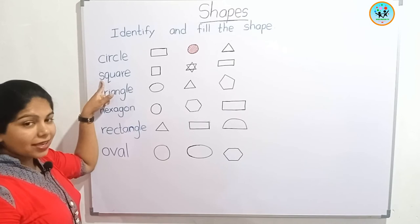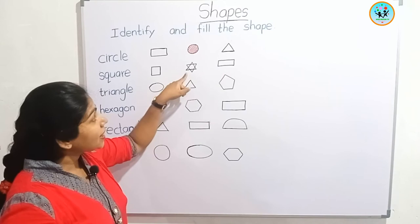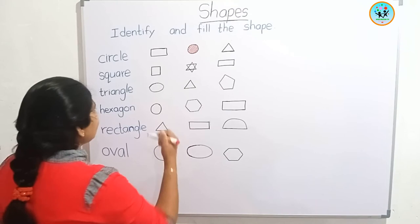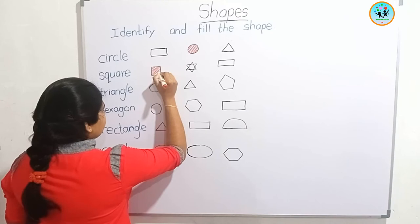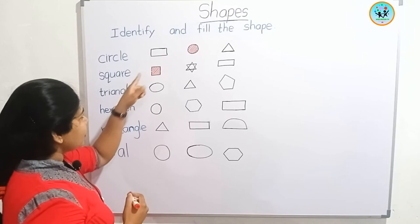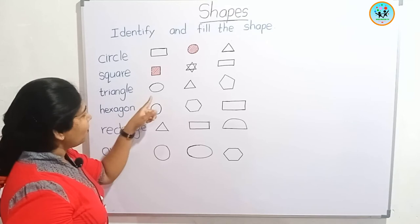Second one — square. We know this. This is a rectangle. This is a star. This is a square. Yes, we found the square — now we can fill it. Look at this square. How many sides are here? Four sides. The four sides are equal.